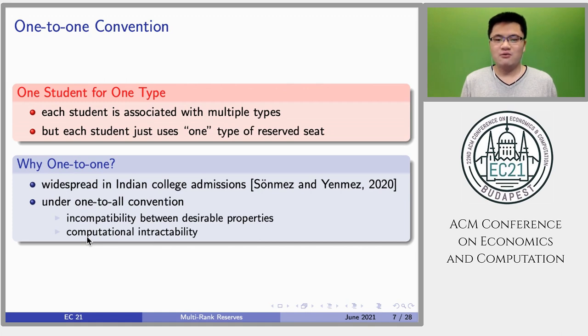Second, under the one-to-one convention, we cannot design any algorithm that satisfies desirable properties at the same time. In addition, it is NP hard to decide whether an outcome that satisfies desirable properties exists.